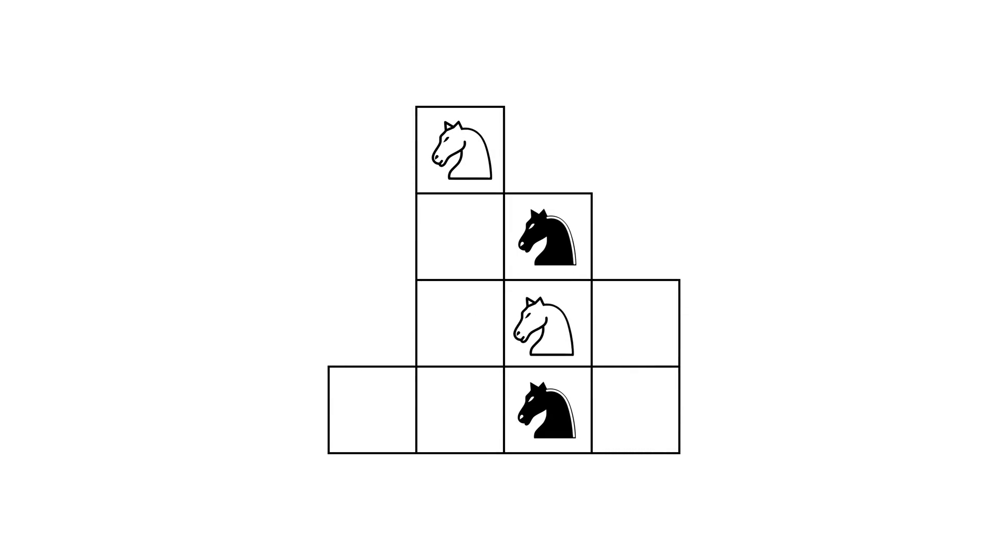Here is one of the solutions to this problem. I know it may seem like the knights are just moving randomly, but each of these moves is actually deliberate. It's just that it's not very obvious why we're moving them in this way. But there we go, the positions of the knights have been swapped.